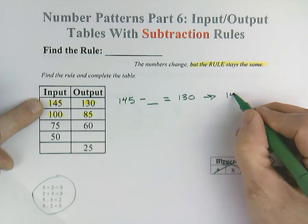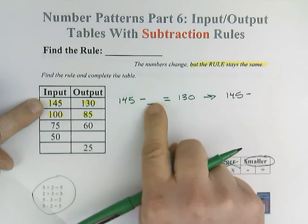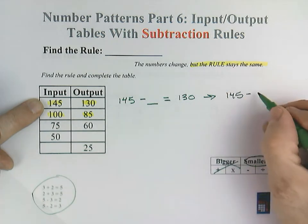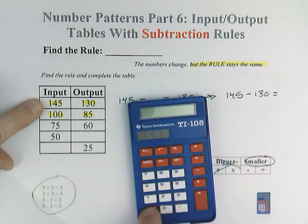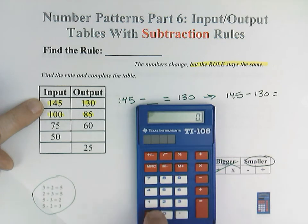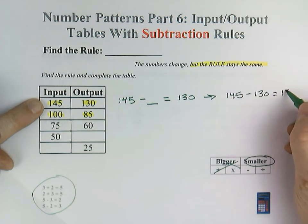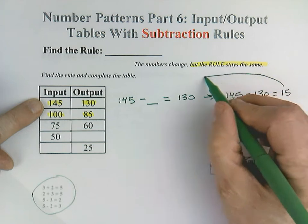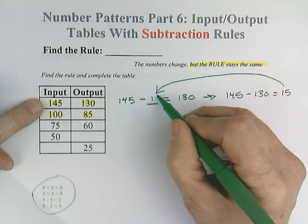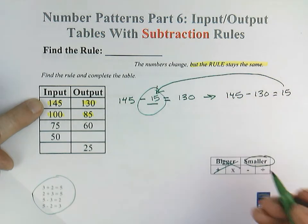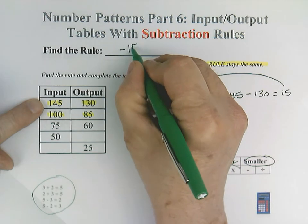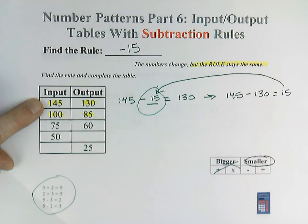So 145, instead of saying minus blank, let's do minus 130. Let's see where we get. 145 minus 130 equals 15. So there's our rule. Our rule is going to be a minus 15 rule.